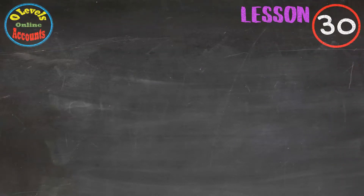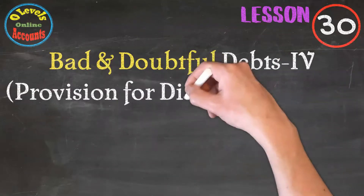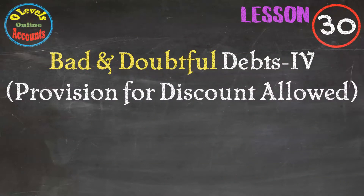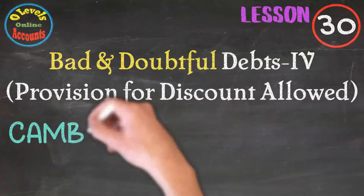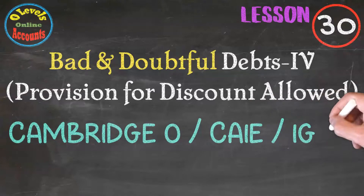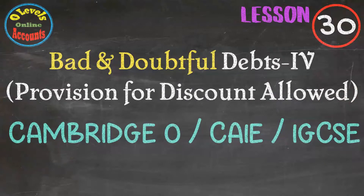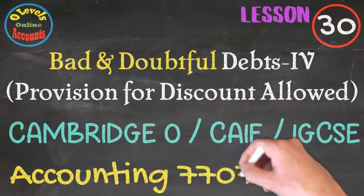Hi students. O Levels Online presents the video lecture series for adjustments for financial statements. In this video, we will discuss the provision for discount allowed. This video series is helpful for those students who are appearing in Cambridge O Levels upcoming exams, either in June or November through CAIE or IGCSE for accounting 7707 or 0452.